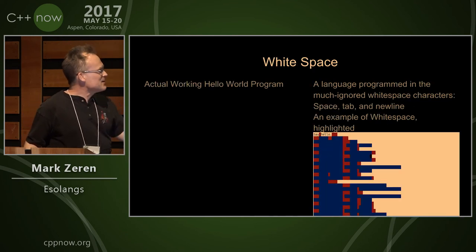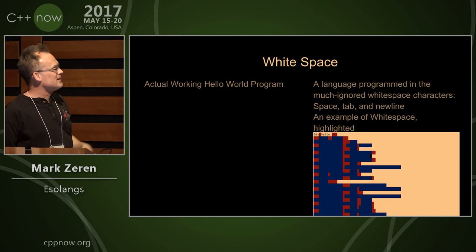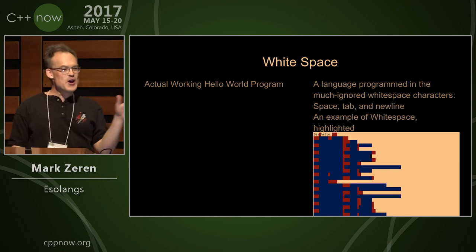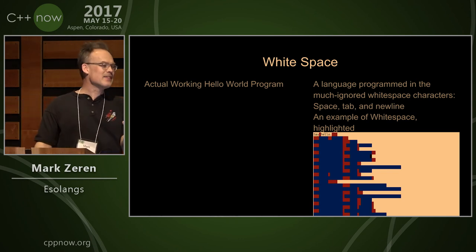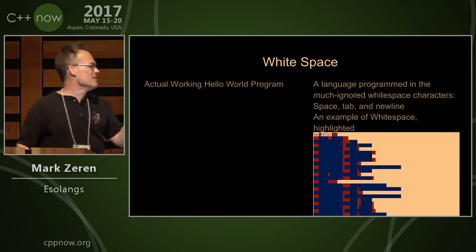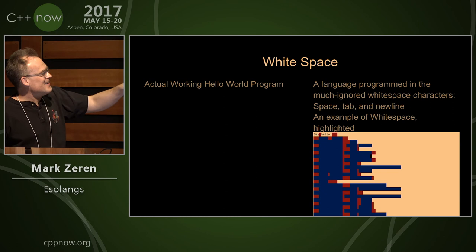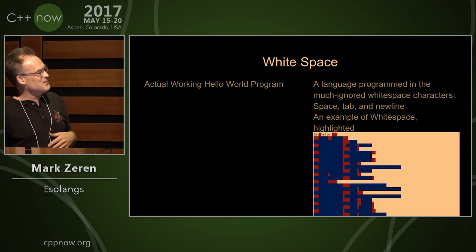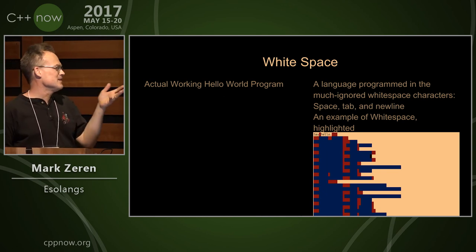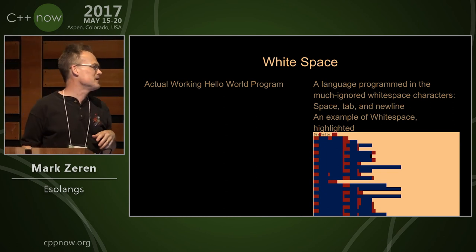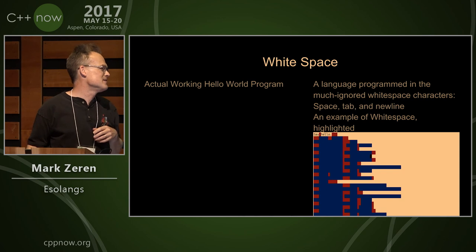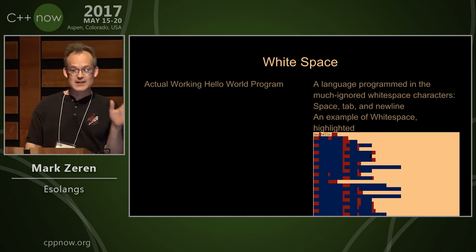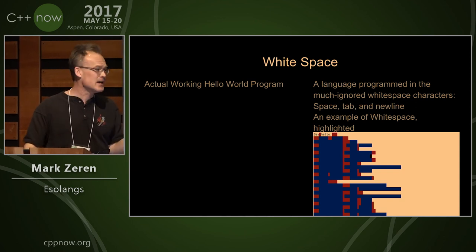The next one is Whitespace, as you can see by the program on the left — no relation to Python — and there's a highlighted version of Hello World on the right. It's implemented with three characters: space, tab, and newline. Everything else is a comment, which is handy.